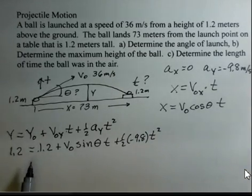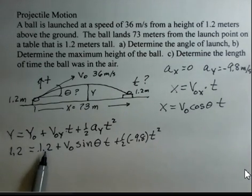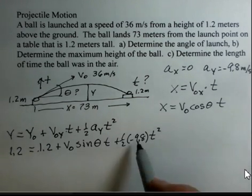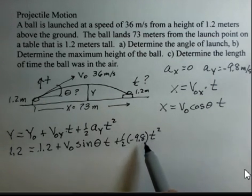This problem is a little bit artificial in that we land and we start at the same level, the same height. So I can subtract 1.2 from both sides, and that will cancel out. I am going to do that. And I'm going to move this term to the left side, so it's going to be a minus 4.9 t squared here.